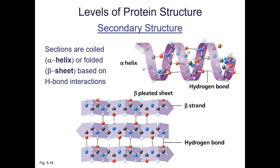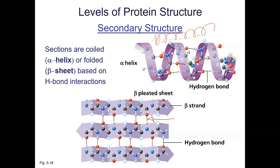Some strands form beta sheets instead. Those strands tend to have larger, bulkier amino acids that don't twist into a nice little helix as easily. Again, hydrogen bonds hold the sheets together. So the protein comes off the ribosome and starts folding into alpha helices and beta sheets. Eventually you start to get a three-dimensional structure — this is called the tertiary structure.